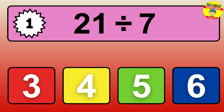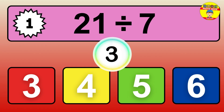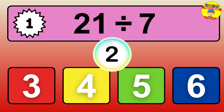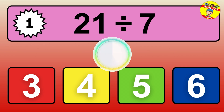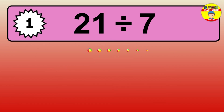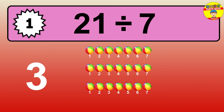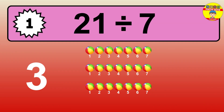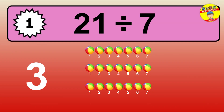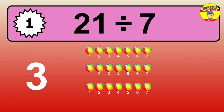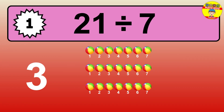24 divided by 4 — time to think. Let's go to the solution. Divide the number 24 by 4. Each group contains 4 units, so dividing 24 by 4 results in 6 equal groups. Thus, the result is 24 divided by 4 equals 6.